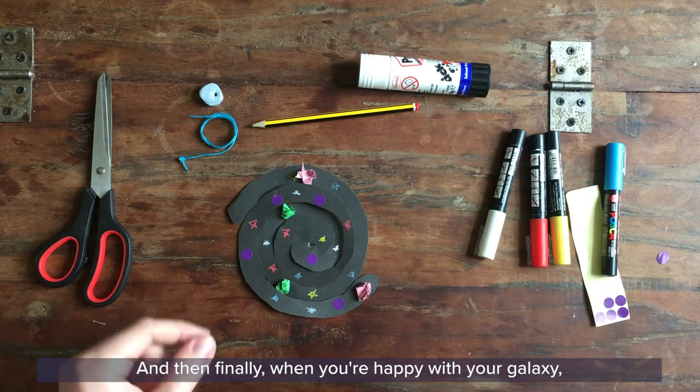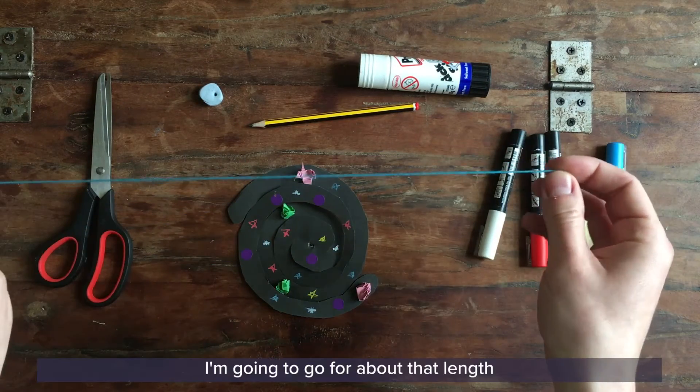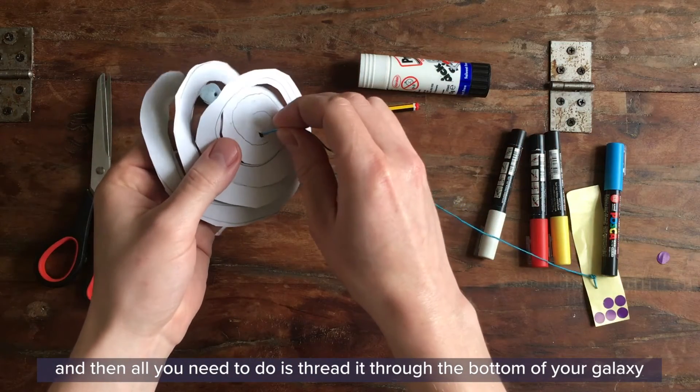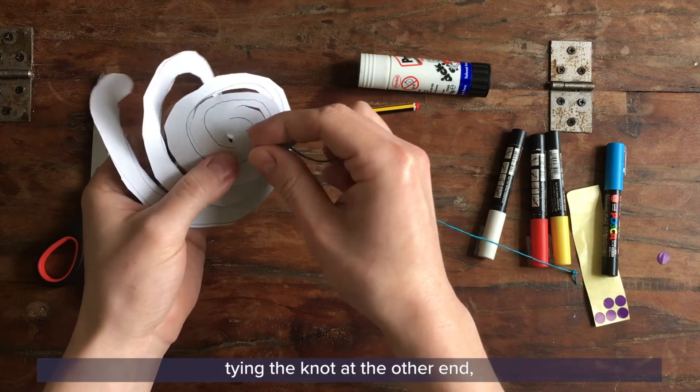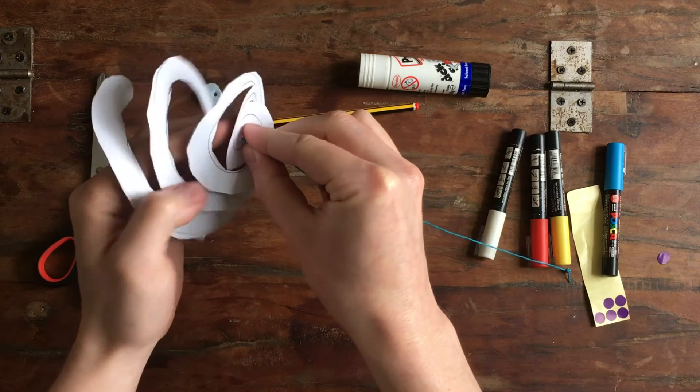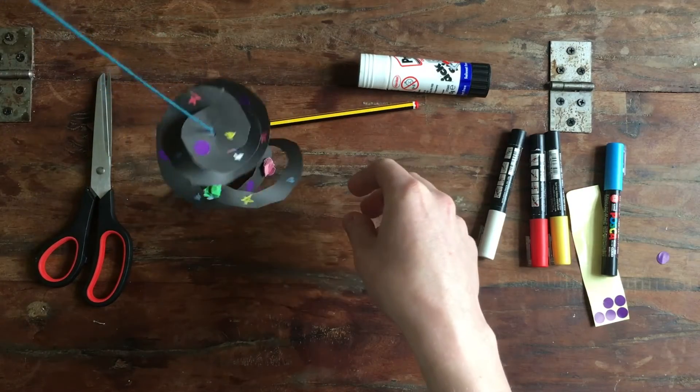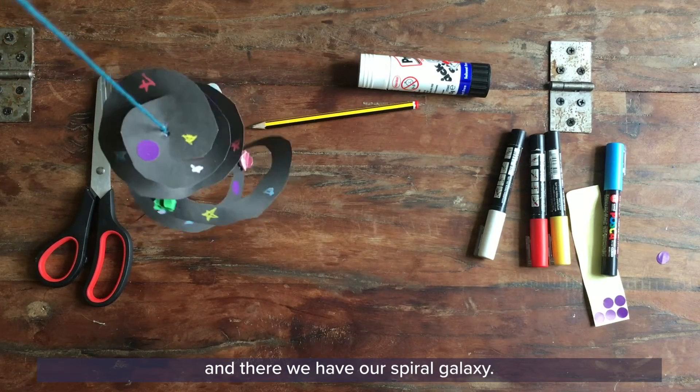And then finally when you're happy with your galaxy all you need to do next is get your piece of string. I'm going to go for about that length. And then all you need to do is thread it through the bottom of your galaxy. Tying a knot at the other end. And there we have our spiral galaxy.